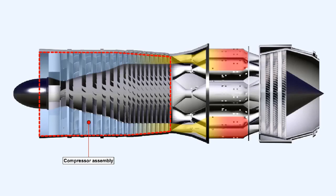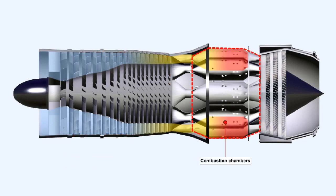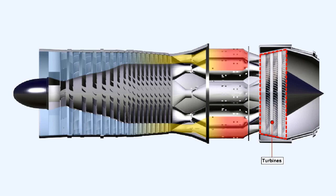To increase the efficiency of the gas turbine engine, the air being fed into it must be compressed before it has fuel added to it and it's burnt in the combustion chambers, and it's subsequently expanded in the turbines.